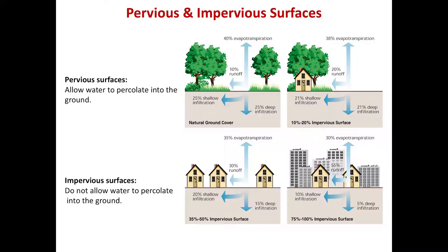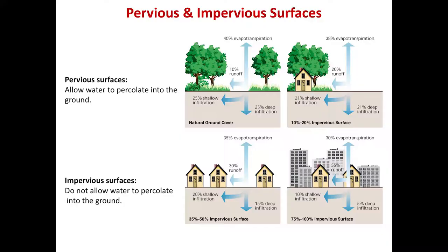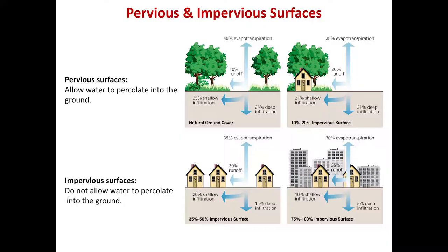You can see here in this diagram that if I have a pervious surface, more water can get in and some runoff occurs. While when I have an impervious surface, less water gets in and more runoff occurs.